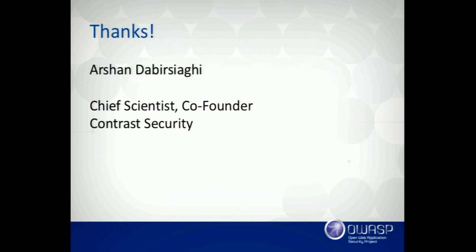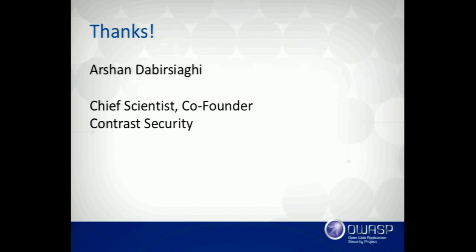Q: What was the nature of the fix for the Jenkins vulnerability — was it blacklisting or whitelisting what can be put in a map? A: They enforced type control — you can configure all of these libraries to only deserialize expected types, but nobody does that by default. Kryo opened a ticket on this, but they're in a real pickle because they'd have to make a backwards-incompatible change to prevent attacks like this. I don't think they're going to end up on the side of security, but enforcing type control is how you fix it.